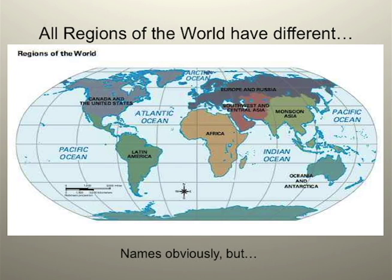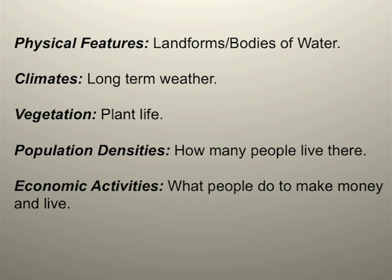This is a map of regions of the world. All the regions of the world have different names, but they also share other differences. The differences are physical features, climates, vegetation, population densities, and economic activities. Each one of these things can help you decide where to go during a zombie invasion.